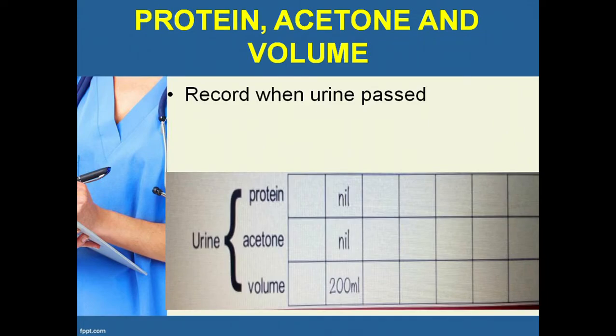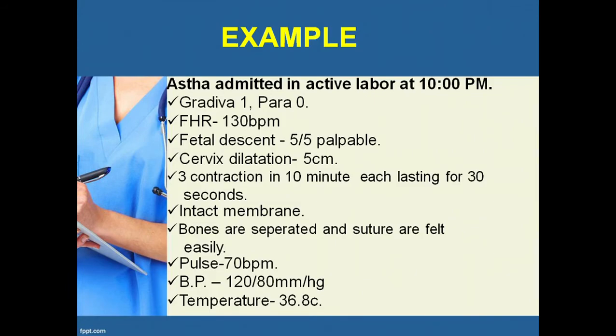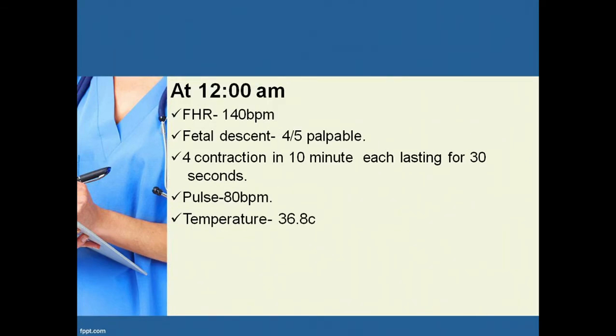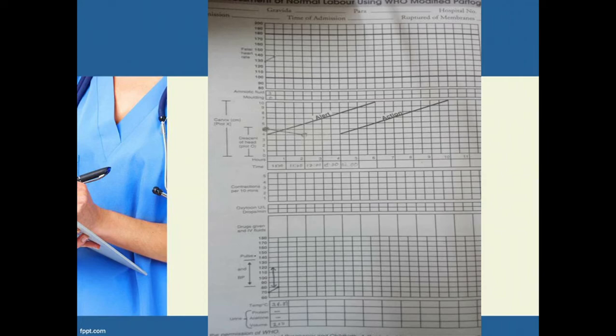Example: A patient is admitted in the active labor room at 10 PM, Gravida 1 Para 0. Fetal heart rate is 130, fetal descent 5/5, cervical dilatation 5 cm, bones are separated and felt easily. Pulse is 70, BP 120/80, temperature 36°C. At 12 AM, fetal heart rate is 140 beats per minute, fetal descent 4/5, contractions are 2 in 10 minutes each lasting 30 seconds, pulse is 80, temperature 36°C. This is how we mark those findings in the partograph.